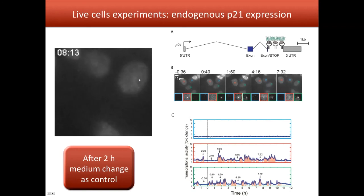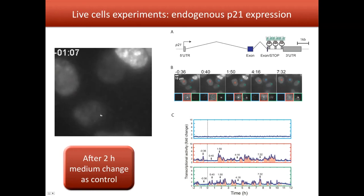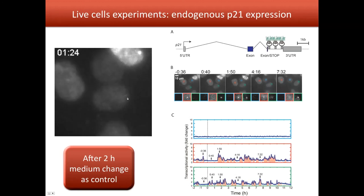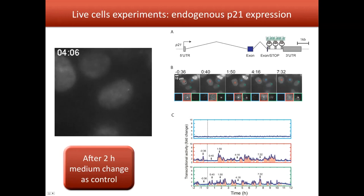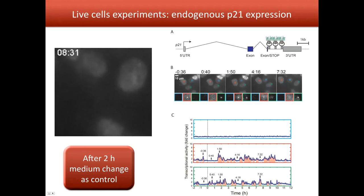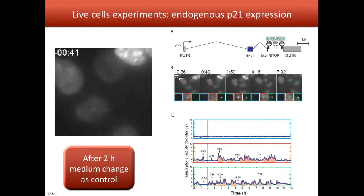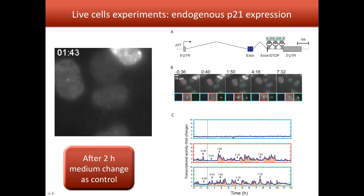In this movie you can see some MCF7 cells which grow and have the MS2 system integrated into the p21 locus. You can see one locus here — the p21 locus — which switches off and on over time, showing when the cell is transcribing p21 mRNA. In this movie we have three cells — one in red, one in blue, and one in green. You can see that sometimes the p21 mRNA is visible and sometimes it isn't. For example, after 40 minutes the red cell is not transcribing while the green cell is transcribing — this is a stochastic process.